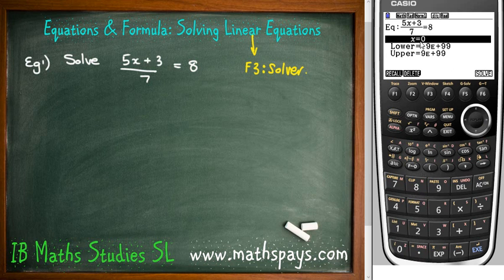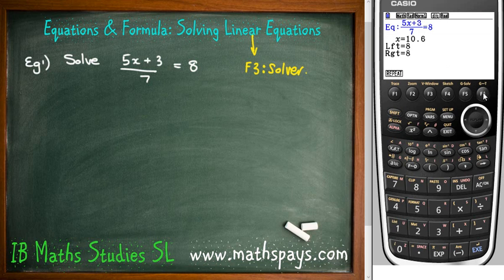Now we can press XE. Again, it hasn't solved it though - it says x equals 0, but you'll notice this solving key over here. If I press F6, look at that, Bob's your uncle. In terms of your solution for IB, you don't actually need to write any working out.